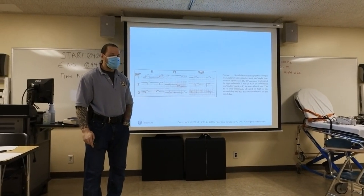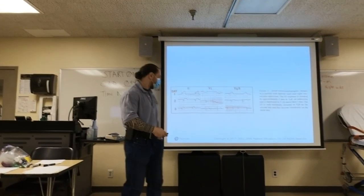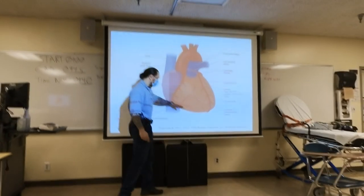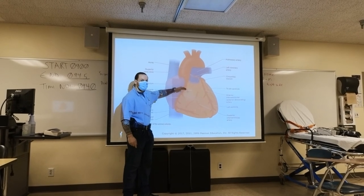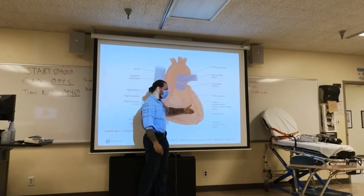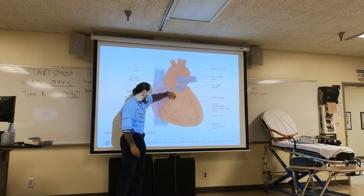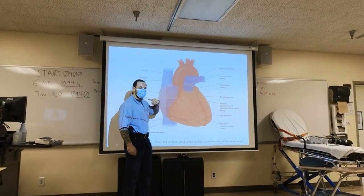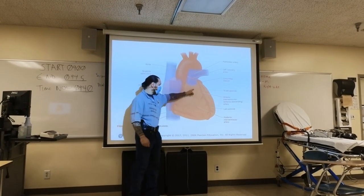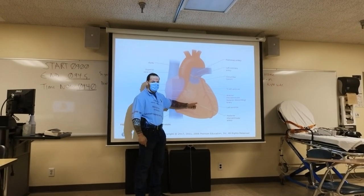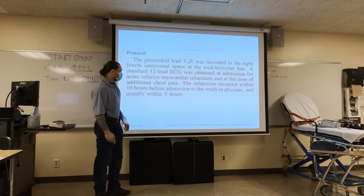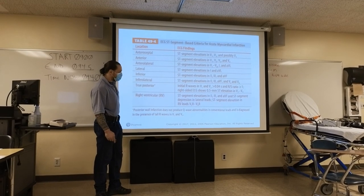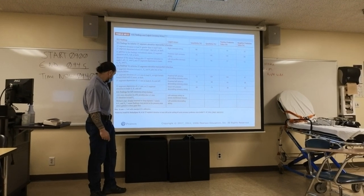For the right ventricle, we just need to identify one lead. When do you do a 15-lead EKG? When I have ST elevations in leads 2, 3, and aVF — the inferior wall — I don't know if the infarct is also affecting my right ventricle. The standard 12-lead only shows inferior, lateral, and anterior walls. I cannot see the right ventricle until I do V4R, and I cannot see the posterior back wall until I do V8 and V9. So if you have ST elevations in 2, 3, aVF, or ST depressions in V1, V2, V3, do a 15-lead EKG. For V4R to be effective, you only need 0.5 mm elevation — not 1 mm.